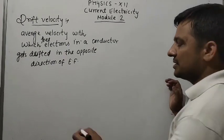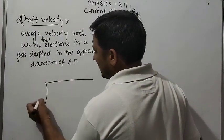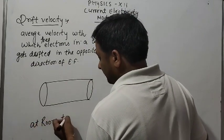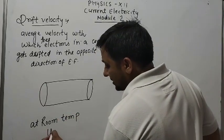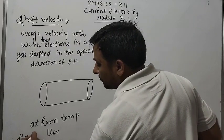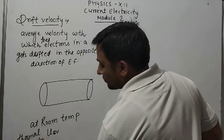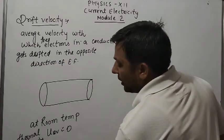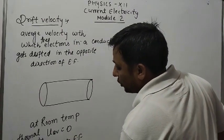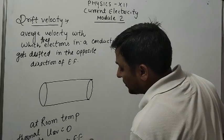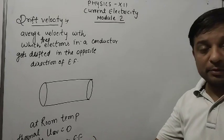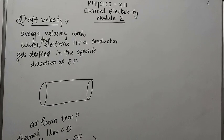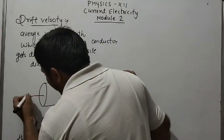Let's derive the formula for drift velocity. At room temperature, the average thermal velocity U-average is zero when no external electric field is applied, so the net thermal velocity is zero.